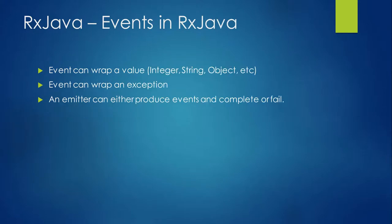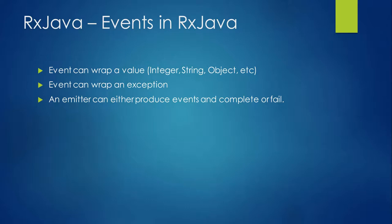First of all, what is an event in RxJava? An event can wrap values — you don't handle the event itself in RxJava, you handle something that the event wraps. You can handle a value that the event is wrapping, or you can handle an exception. So an event in RxJava can wrap a value or an exception. An emitter — the object that emits or produces these events — can either produce zero, one, or many events and then complete, or it can fail.